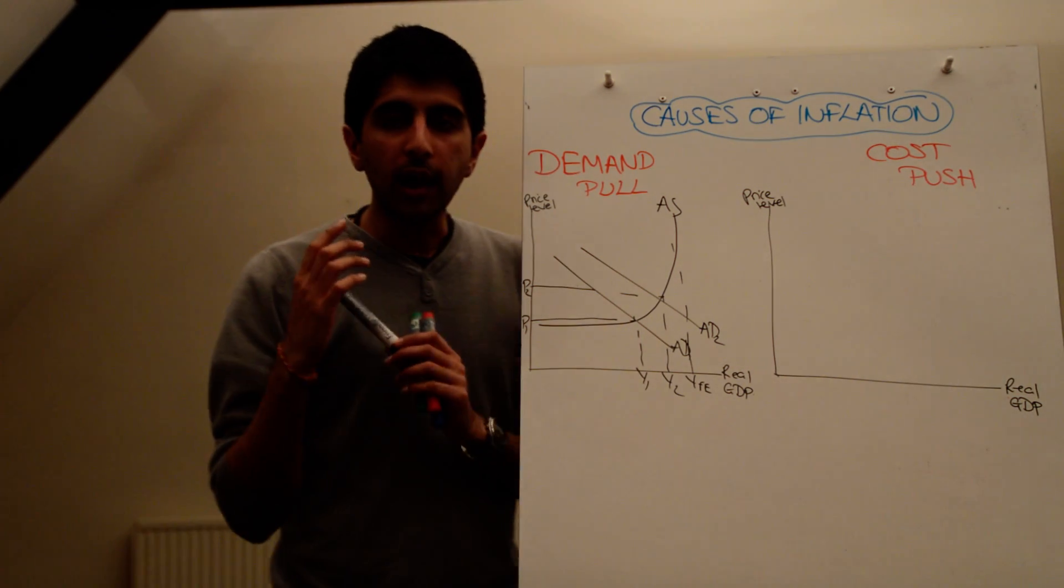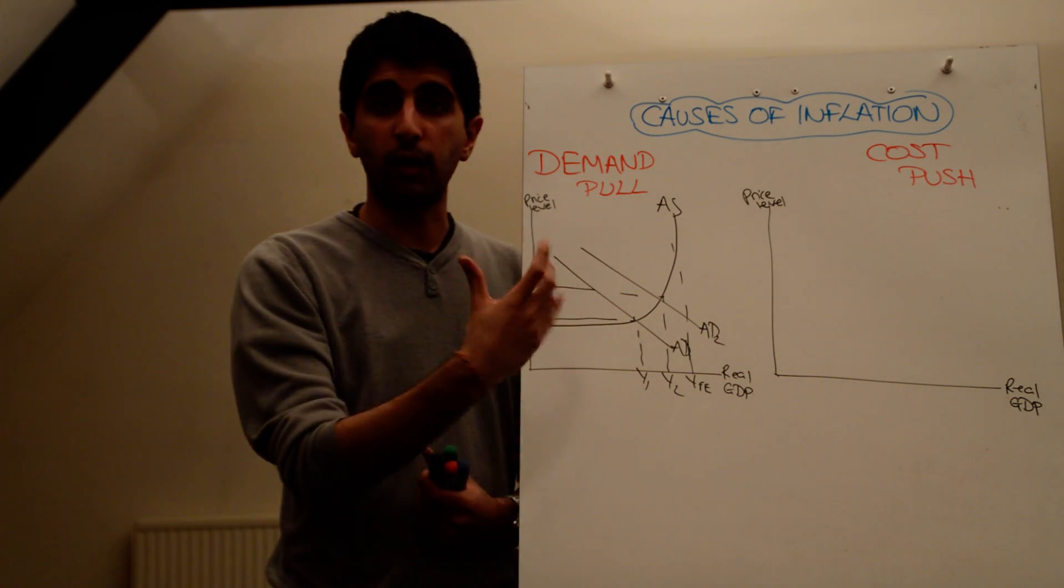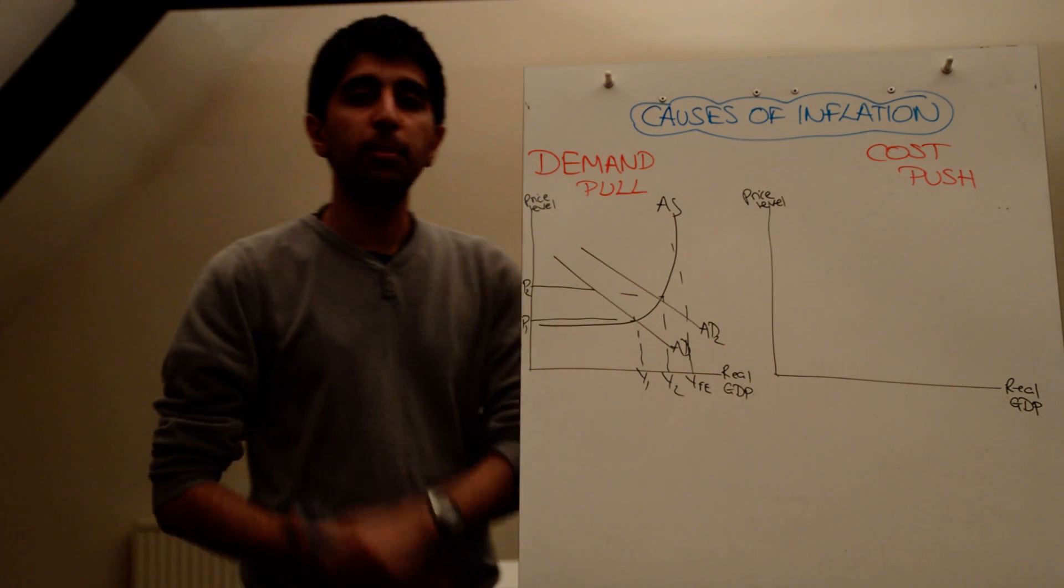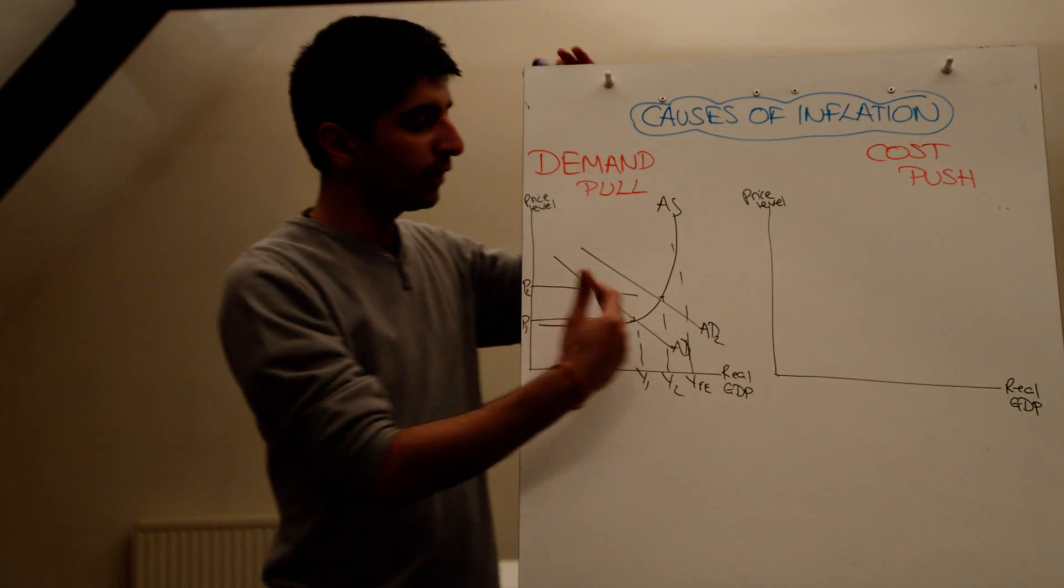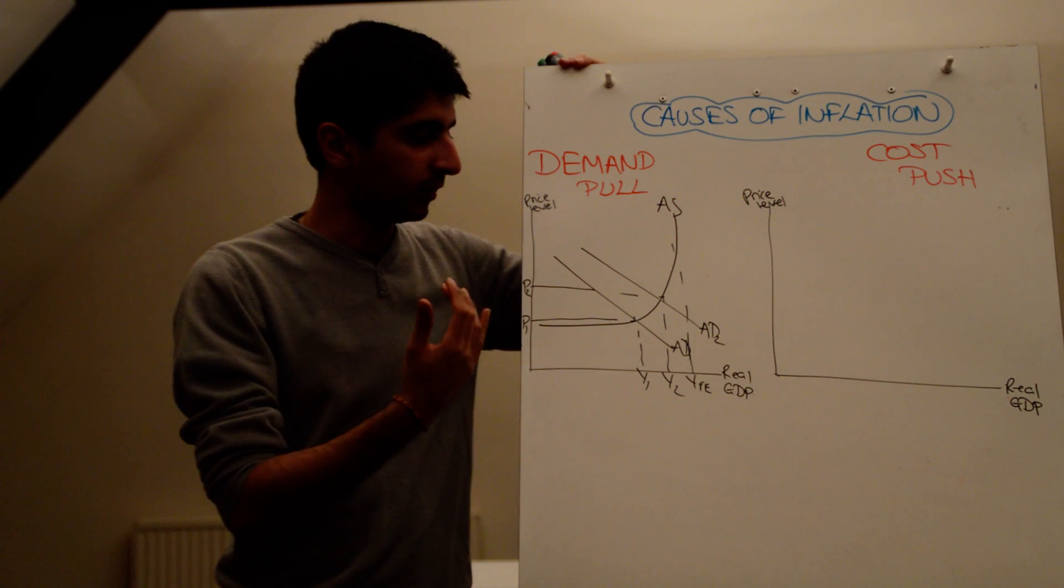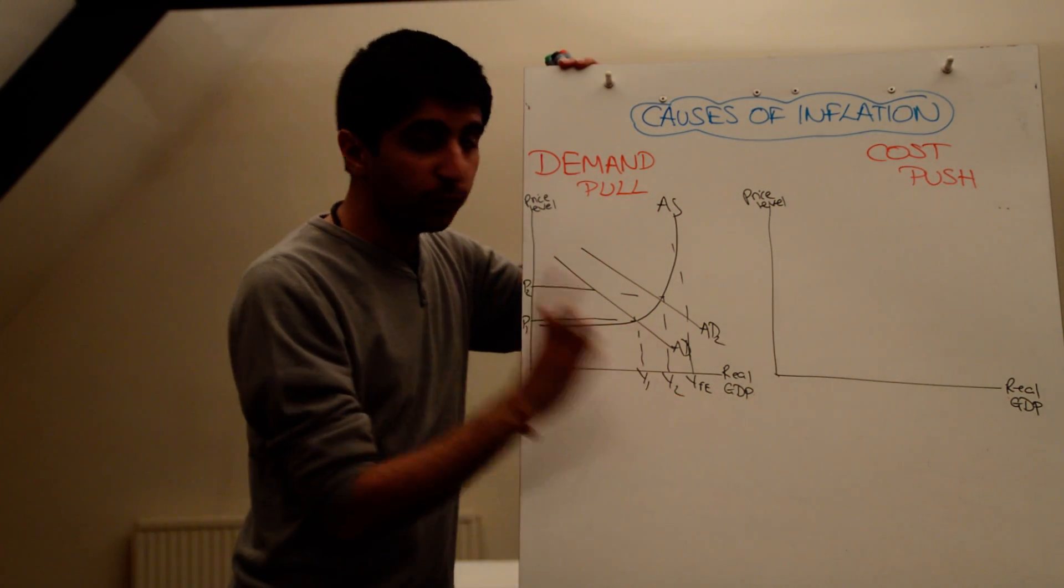Right. It's not enough to just say that demand pull inflation is caused when aggregate demand shifts to the right. That's too simple. You need to actually explain in more depth why. Why exactly has inflation gone up? Yes, an increase in aggregate demand causes an increase in prices, an increase in pressure on prices. But why? Well, the reason is this.